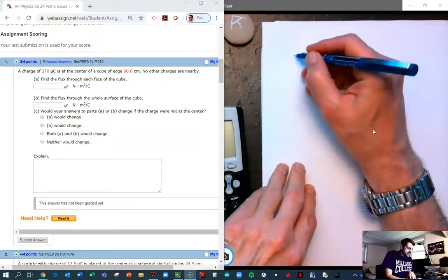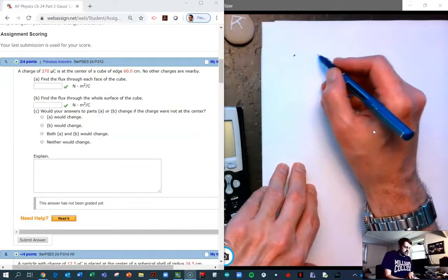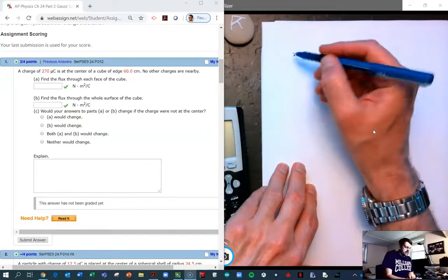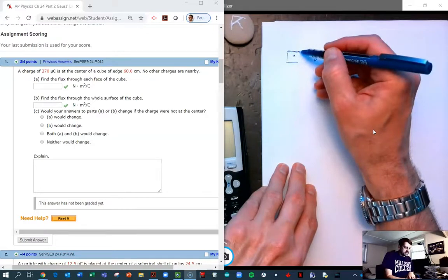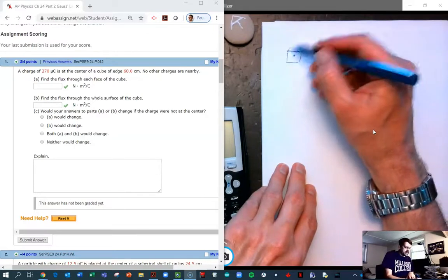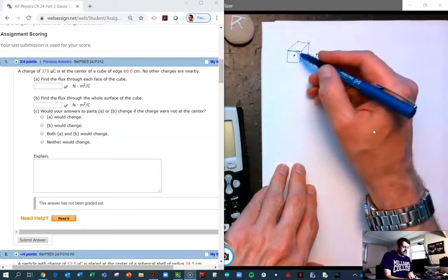So the idea is we have a charge. In this case, for me, it's a 270 microcoulomb charge. And then we're going to enclose it in a cube. And here it tells us that the cube is 60 centimeters along each side. And that is actually invariant. We don't really care about that.